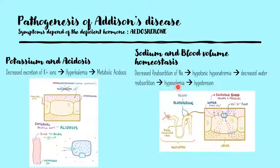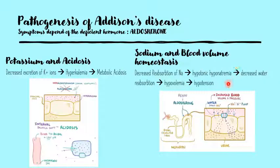Sodium is also no longer being reabsorbed as effectively because we do not have enough aldosterone, and so water is not being absorbed properly either. This leads to hypotonic hyponatremia. Interestingly, people with Addison's disease typically have intense cravings for very salty food because they need to compensate for the loss of sodium — a very typical symptom of Addison's disease.